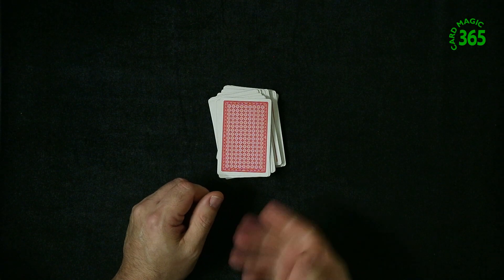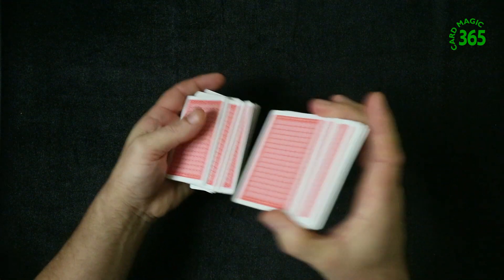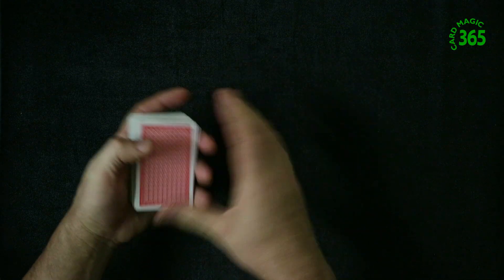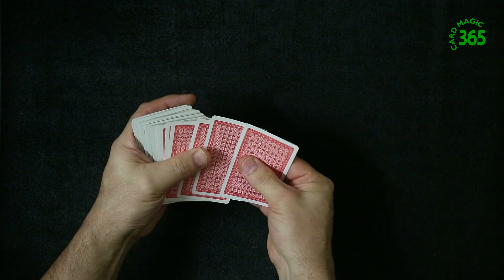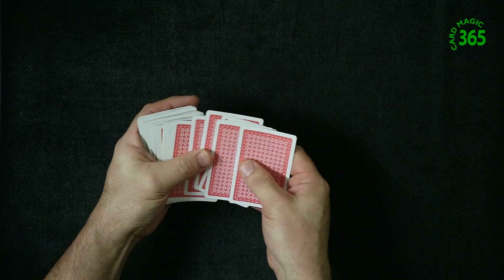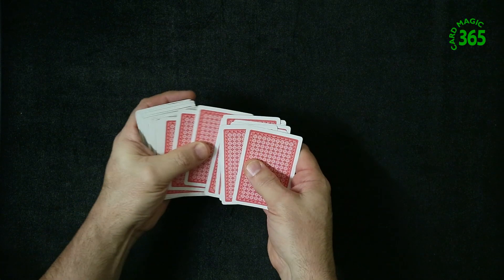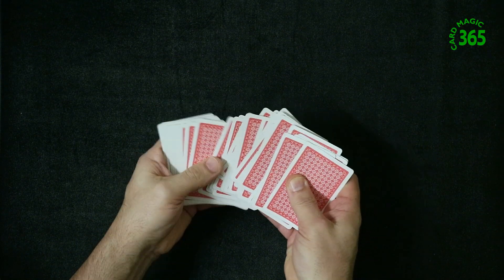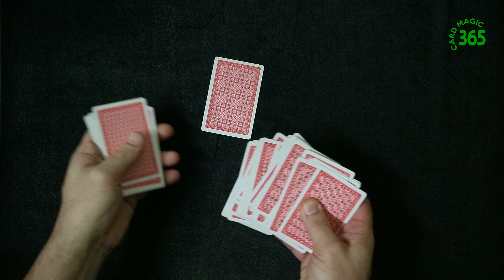This one requires just a regular deck of 52 cards. The spectator can shuffle these cards as much as they like. When they give them back to you, you're going to say I want you to go through these cards, I want you to take any card that you like.